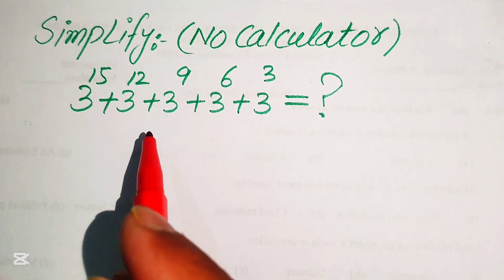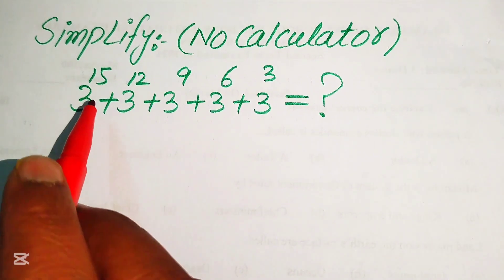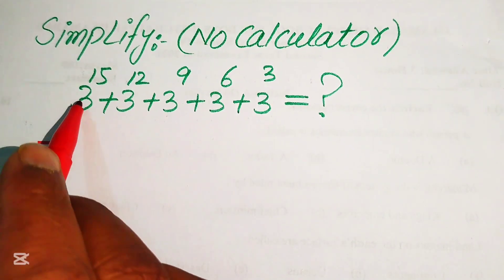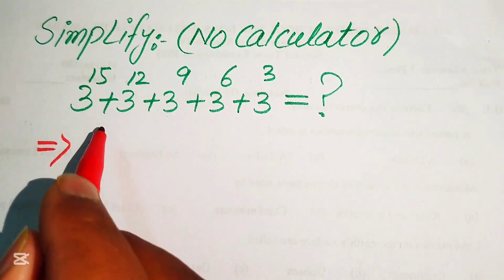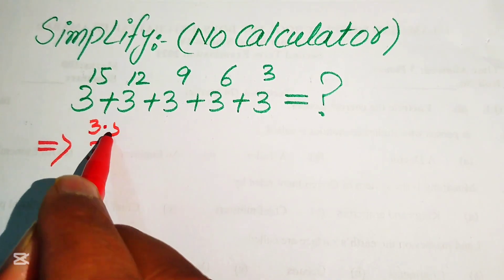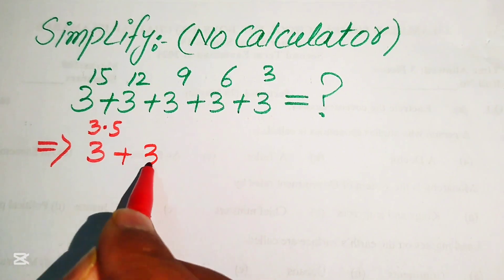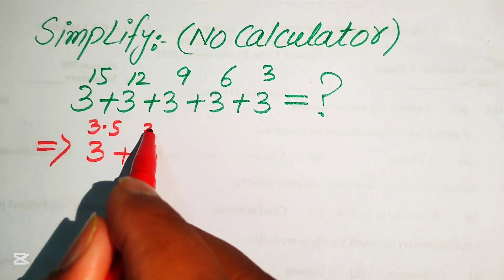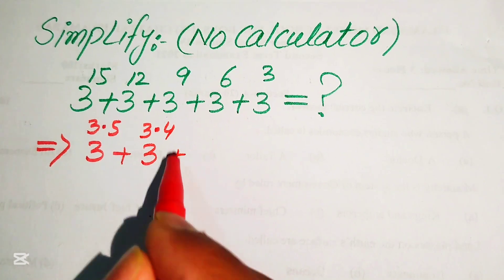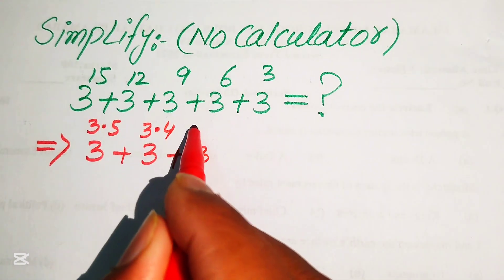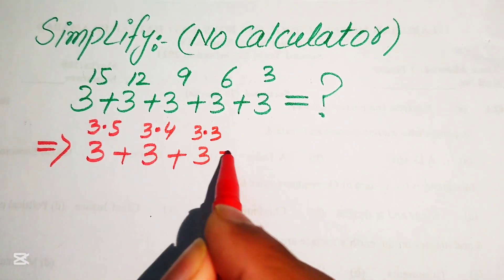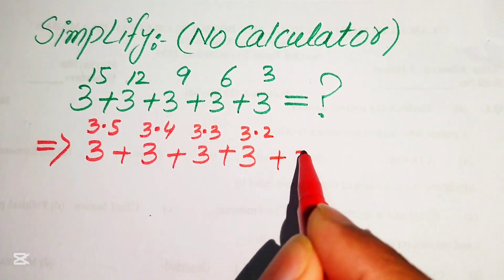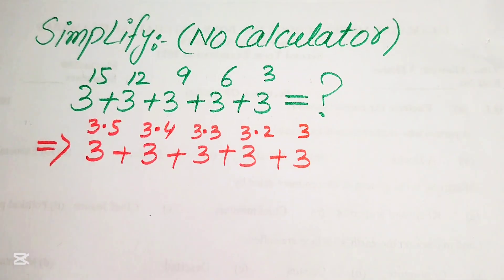The very first step is to focus on the exponents of this expression. The exponent of the first term is 15, we write it as 3 times 5. The exponent of the second term is 12, we write it as 3 times 4. This is 9, we write it as 3 times 3. And this is 6, we write it as 3 times 2, plus 3 to the power of 3.